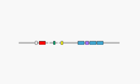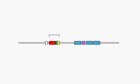Immunoglobulin genes are composed of separated segments of DNA that become joined together by a process called somatic recombination to make a functional gene.